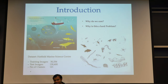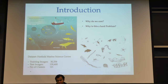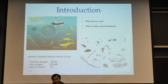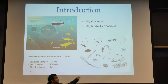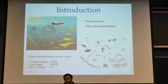We are using a dataset provided by Hatfield Marine Science Center. It has 30,000 training images and 130,000 test images. There are 121 different plankton classes, so it is a really skewed dataset. As you can see, these are the types of images present in the dataset. Each image contains one plankton. These are black and white images and they are around 100 by 100 pixels in size.